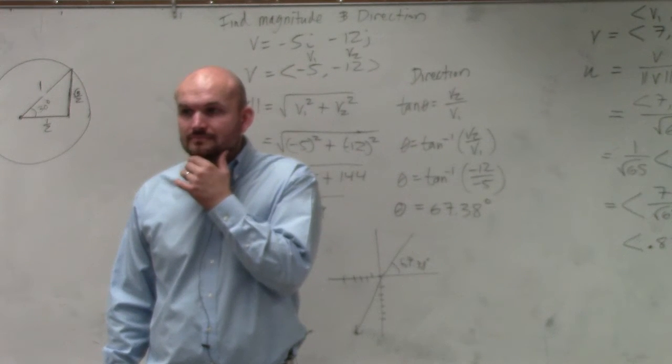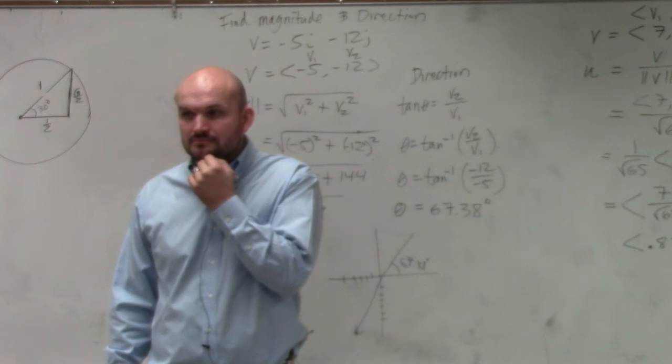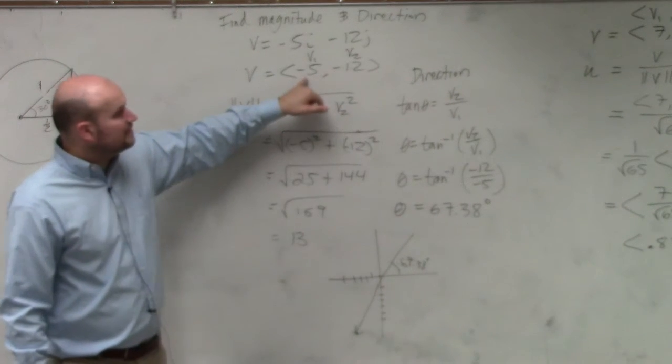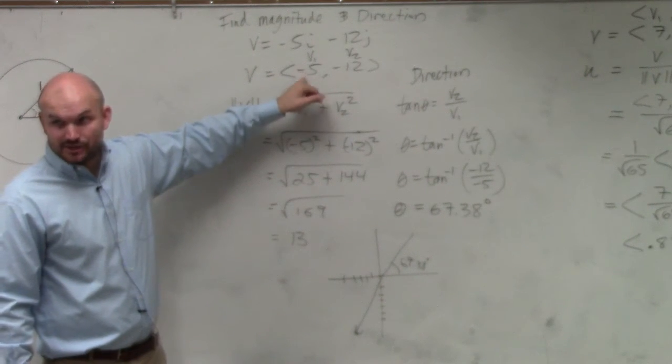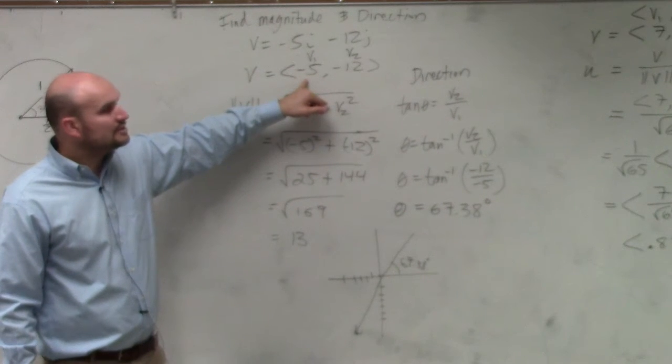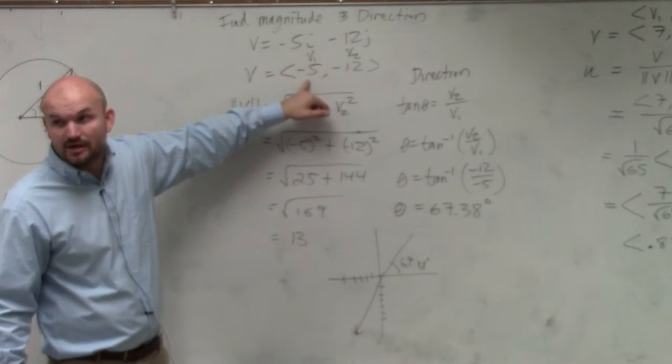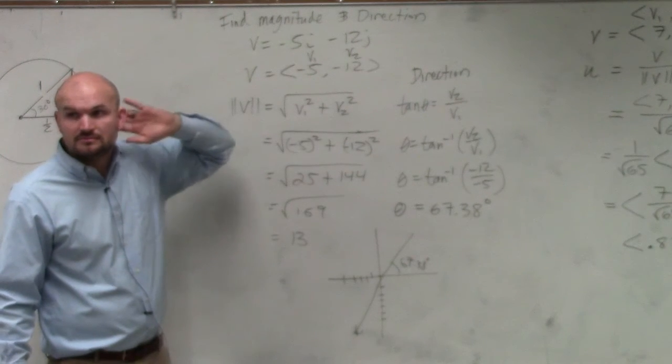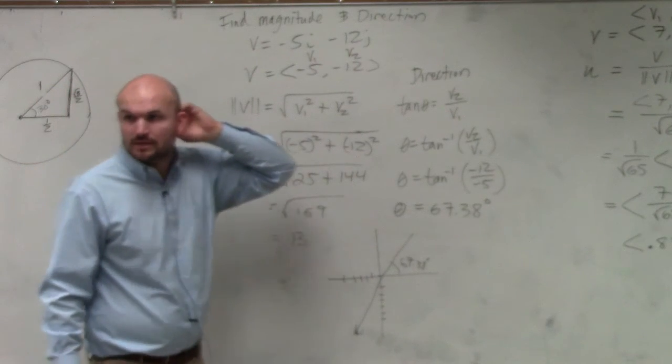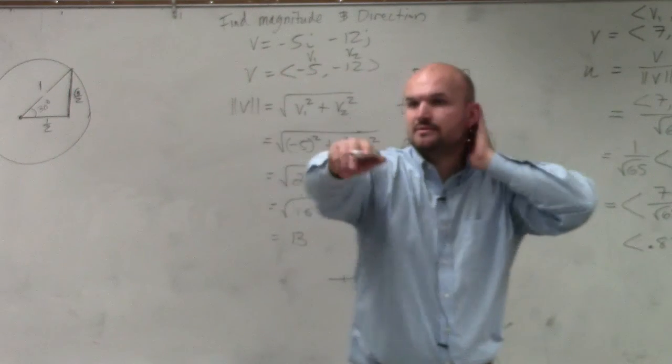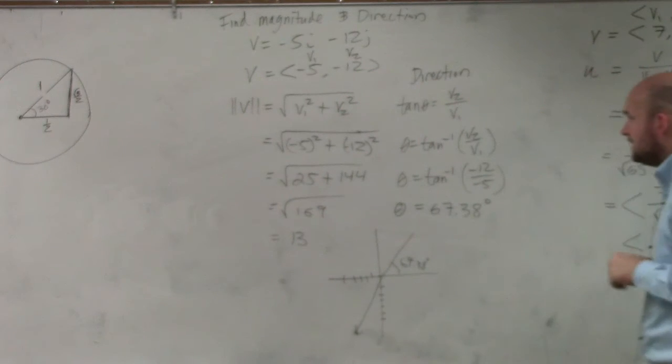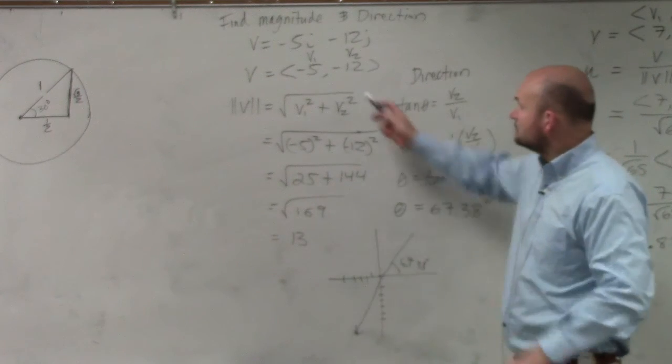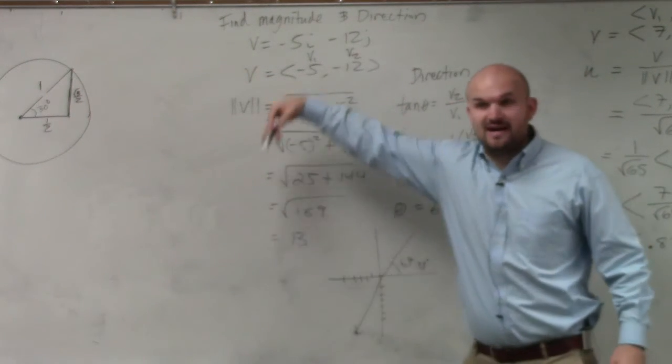You said i is going up, and j is going side by side. So if it's negative 5, this is how far you go left or right. So you're going negative. Yes, go ahead. I is going left and right. J is going up and down. Negative 5 means you're going to the left. Negative 12 means you're going down.